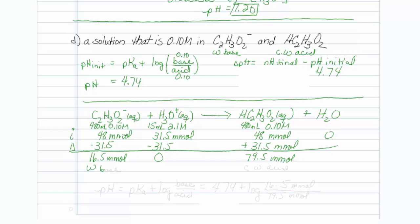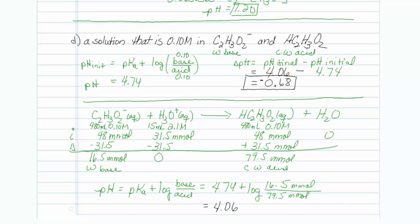Once again, I have a weak base, and I have the conjugate acid of the weak base. So I have the conjugate weak acid. We still have weak base and weak acid present, so we call that a buffer. So once again, let's pull out that Henderson-Hasselbalch. pH is equal to pKa plus log of base over acid. So pKa is 4.74. My base is the 16.5 millimoles. My acid is the 79.5 millimoles. When I put that in my calculator, the value that comes out is 4.06. If I put 4.06 as the final pH, minus 4.74, the change in pH is minus 0.68.